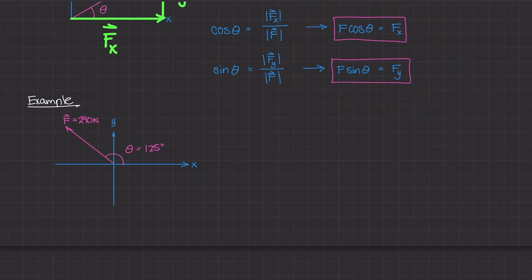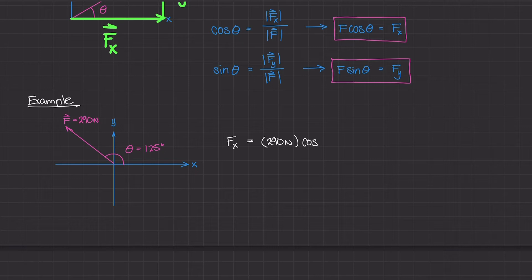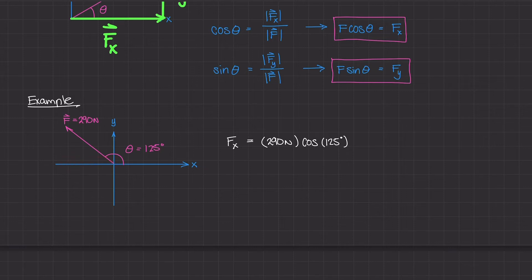Starting with Fx: the magnitude of Fx equals F cosine theta, so that's 290 N times cosine of 125 degrees. Intuitively, since the force vector is acting in the second quadrant, the x-component is going to the left, so we expect a negative value. Plugging this in, we do get a negative value: negative 166.3 Newtons.